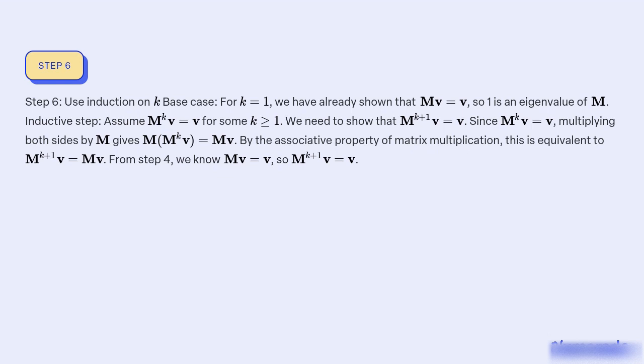Step 6: Use induction on k. Base case: For k = 1, we have already shown that Mv = v, so 1 is an eigenvalue of M.